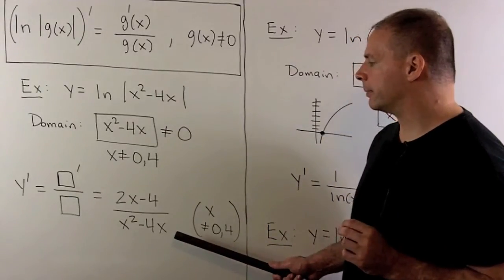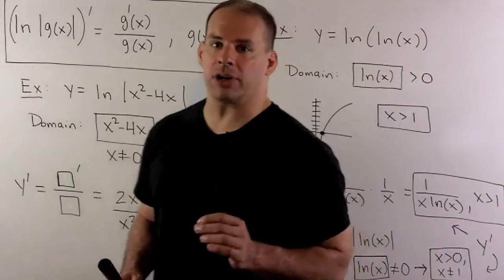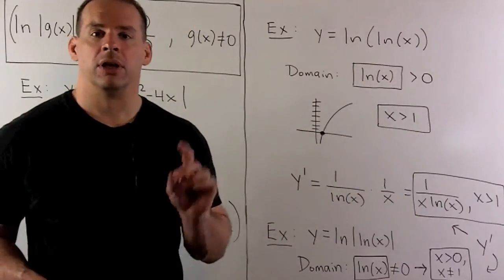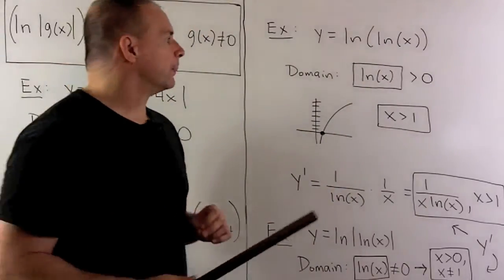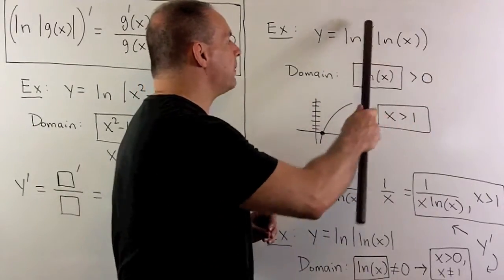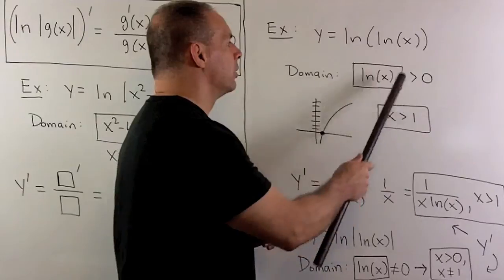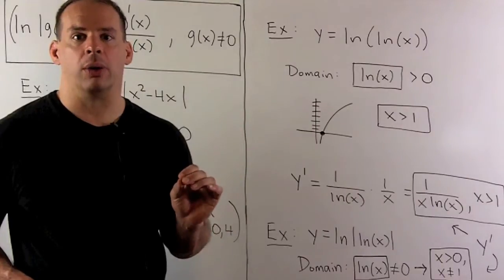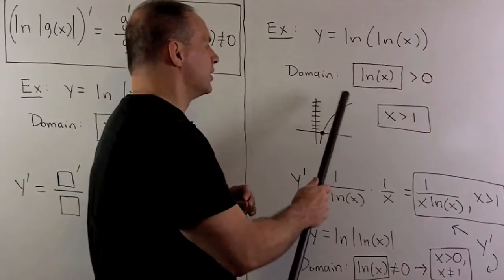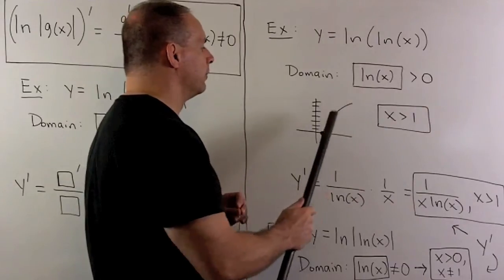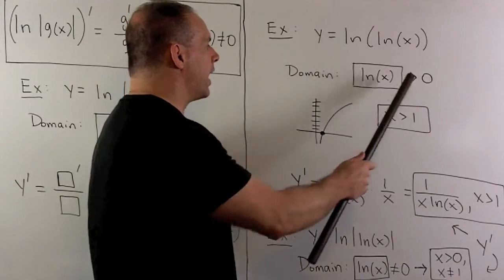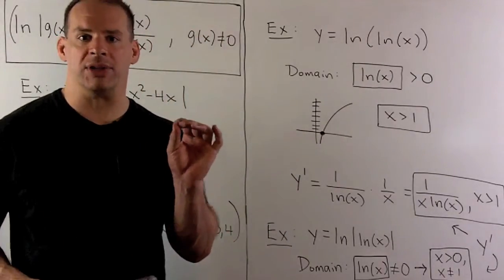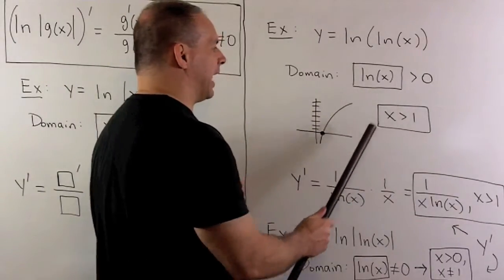Another example: y equals natural log of natural log of x — no absolute value. For the domain, we take what's inside the outer natural log, which is natural log of x, and set it greater than zero. We want to know for which x is natural log of x greater than zero. From the graph, that's where the y-values are positive, which happens when x is greater than one, since the graph crosses the x-axis at the point (1, 0).